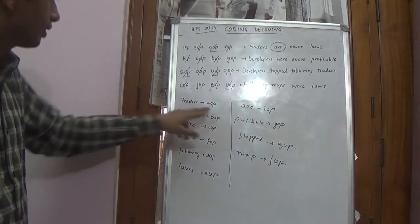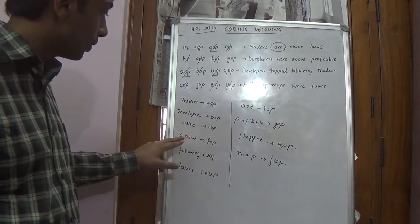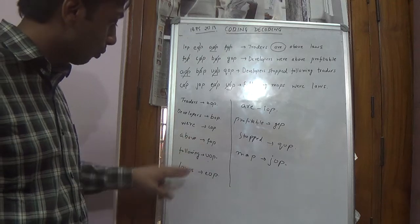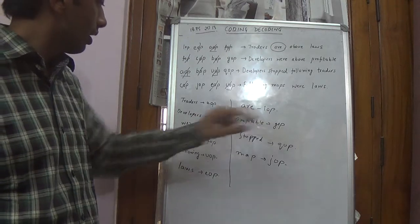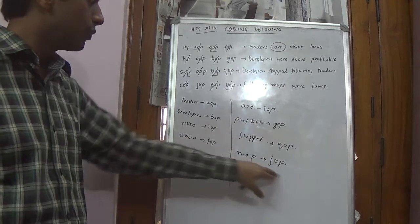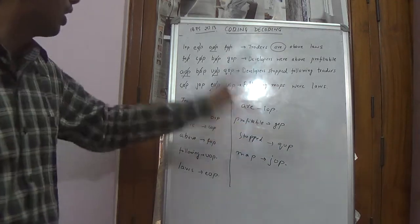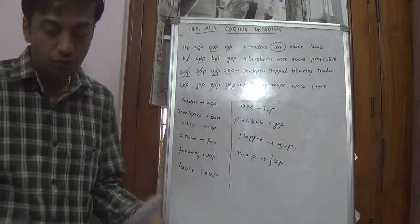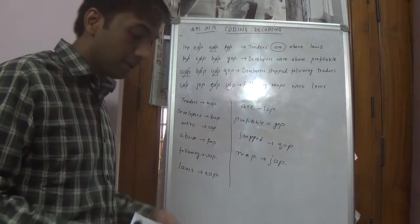Now we will check once again. Traders AOP, developers BOP, were COP, above FOP, following UOP, laws EOP, are LOP, profitable GOP, stopped QOP, maps JOP. So all of them are unique. So now we have found out which word represent what. Now there are very easy 4 questions which could be solved in a matter of say in a minute.